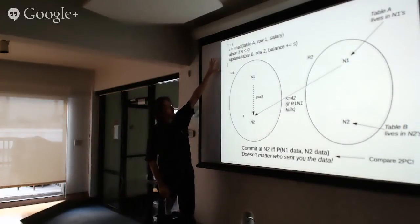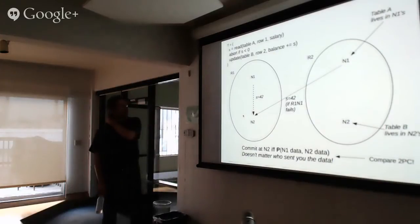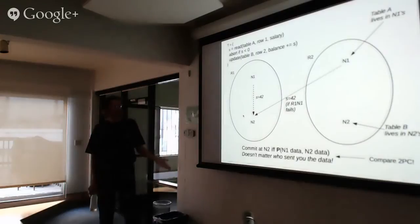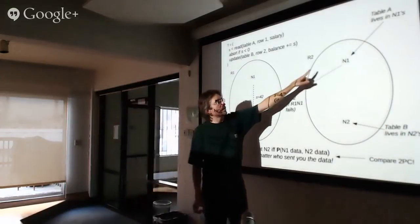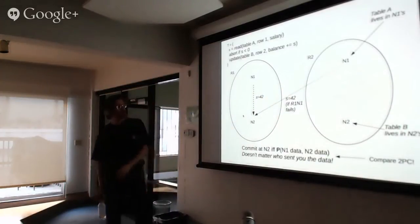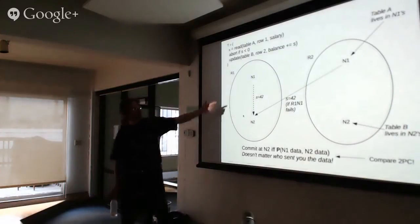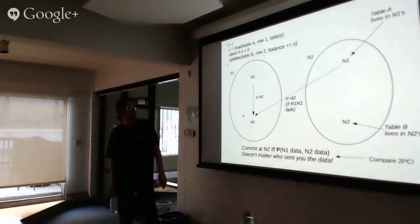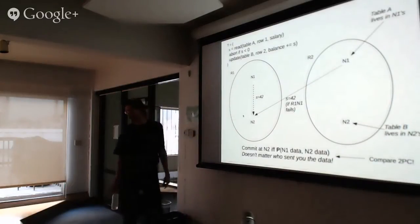Here's a simple example. The transaction reads from table A, row 1, column salary. We abort if salary is negative, then go to table B and update a row by incrementing a balance by the value read from table A. Table A lives in the N1 nodes and table B in the N2 nodes. Somehow we have to get the read result from N1 to N2 to execute the transaction at N2. That dotted line is the job of the readcaster — it shares that one value. It knows N2 is going to need it, so it just goes ahead and sends it without waiting for a request.